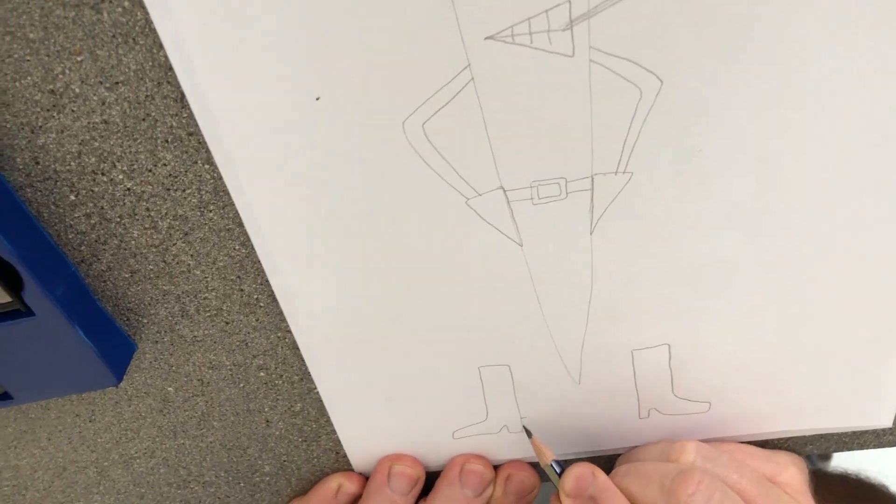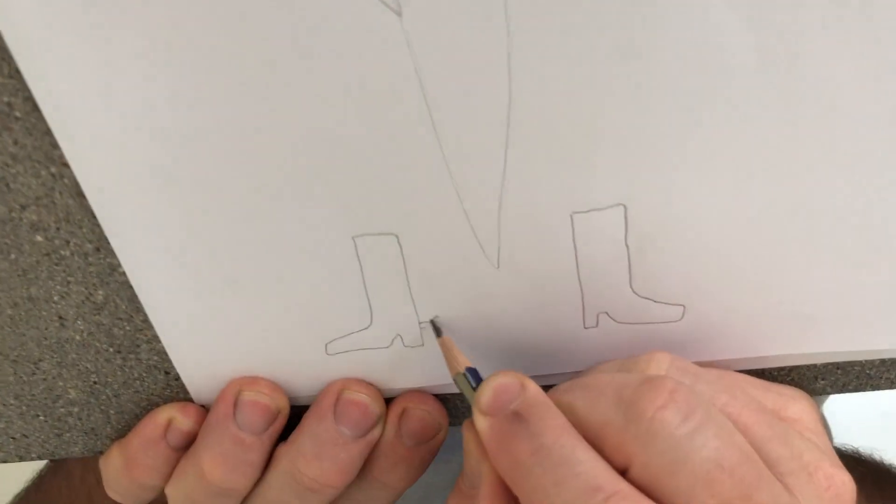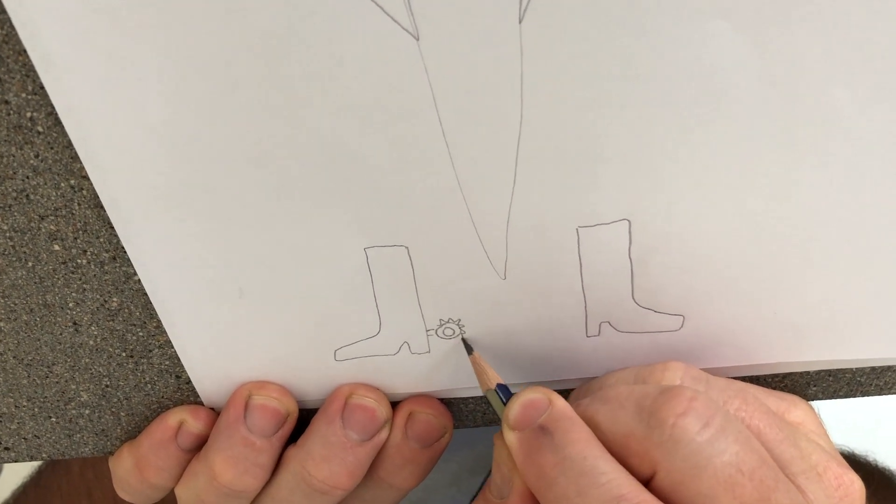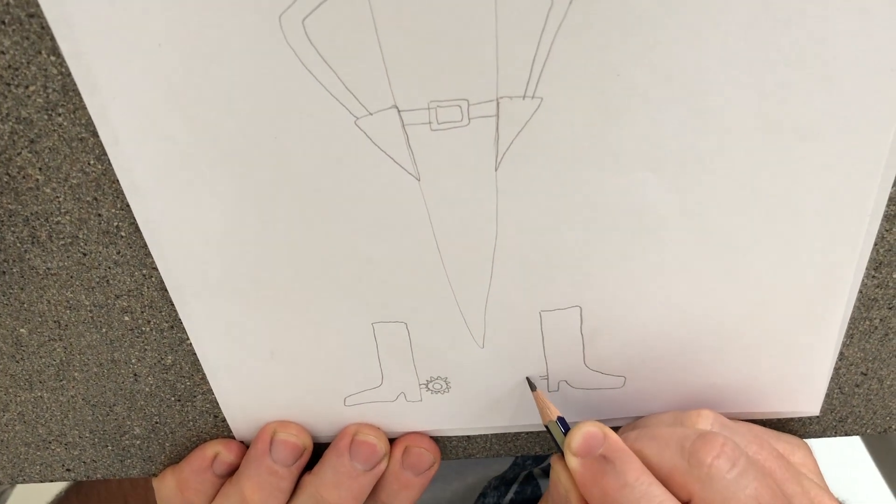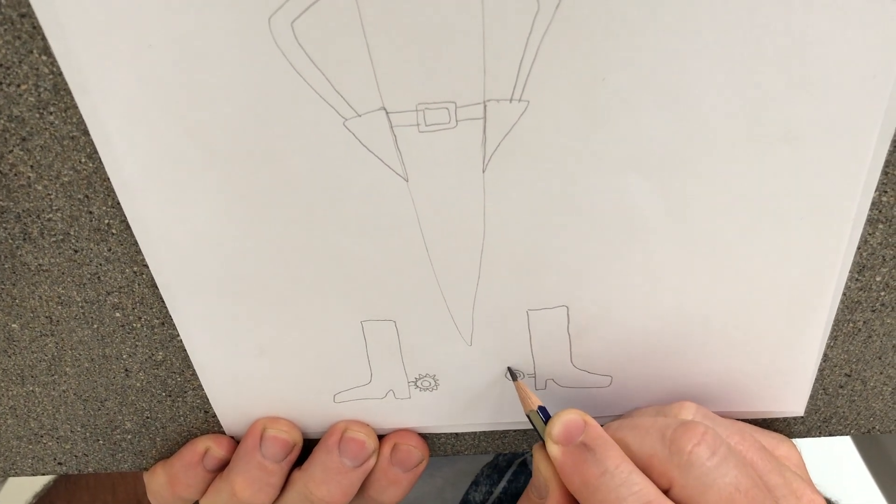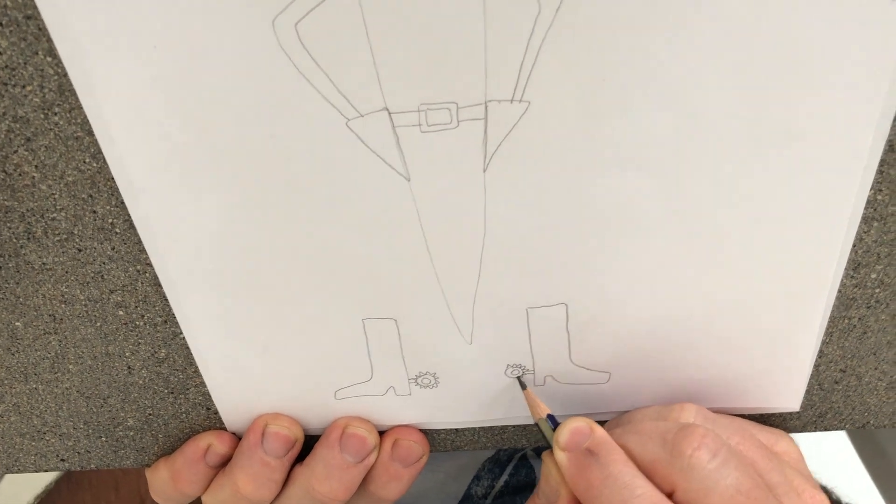Now my cowboy boots have some little spurs on them, on the heels like so. Lila, do you want some? I can have stripes. Oh, stripes on your boots. That's something different. Then all you have to do is put the legs on.